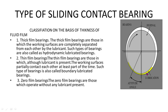First come the thick film bearings. Thick film bearings are the bearings in which a thick film of lubricant lies between the shaft and the bearing. In this case, the thickness of the fluid film lying between the journal and the bearing is very large.